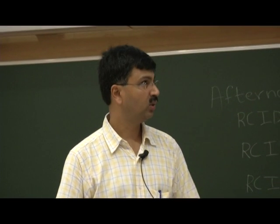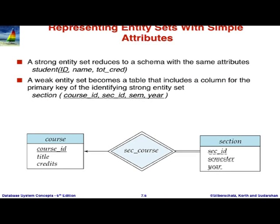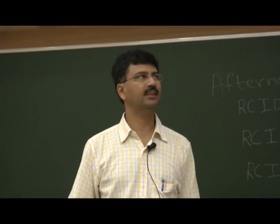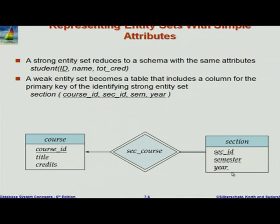Given that we have about 10 minutes left, I will quickly touch on just one or two topics. Every strong entity set will become a relation of its own. Every weak entity set would also become a relation of its own. Relationships may become relations of their own or may get folded into entity sets. So section became a relation. What were its attributes? You have to copy over the primary key from the identifying course - so course ID, section ID, semester, year. What are the other attributes depends on what relationships we fold into section.